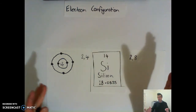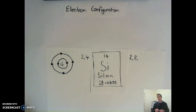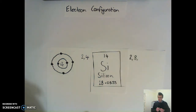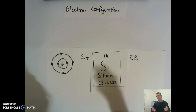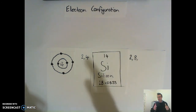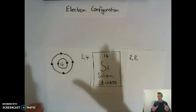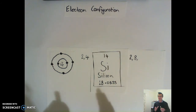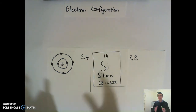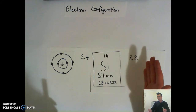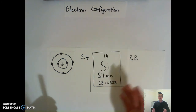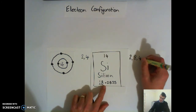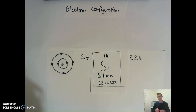We're only at 10 so far, so I put another comma, meaning I've got another shell to fill. Two and eight is 10, that leaves me with four electrons. The next shell can hold a maximum of eight in its valency shell or valency energy level. Four is not more than eight, so we just put a four there. And there's the electron configuration for silicon: 2, 8, 4.